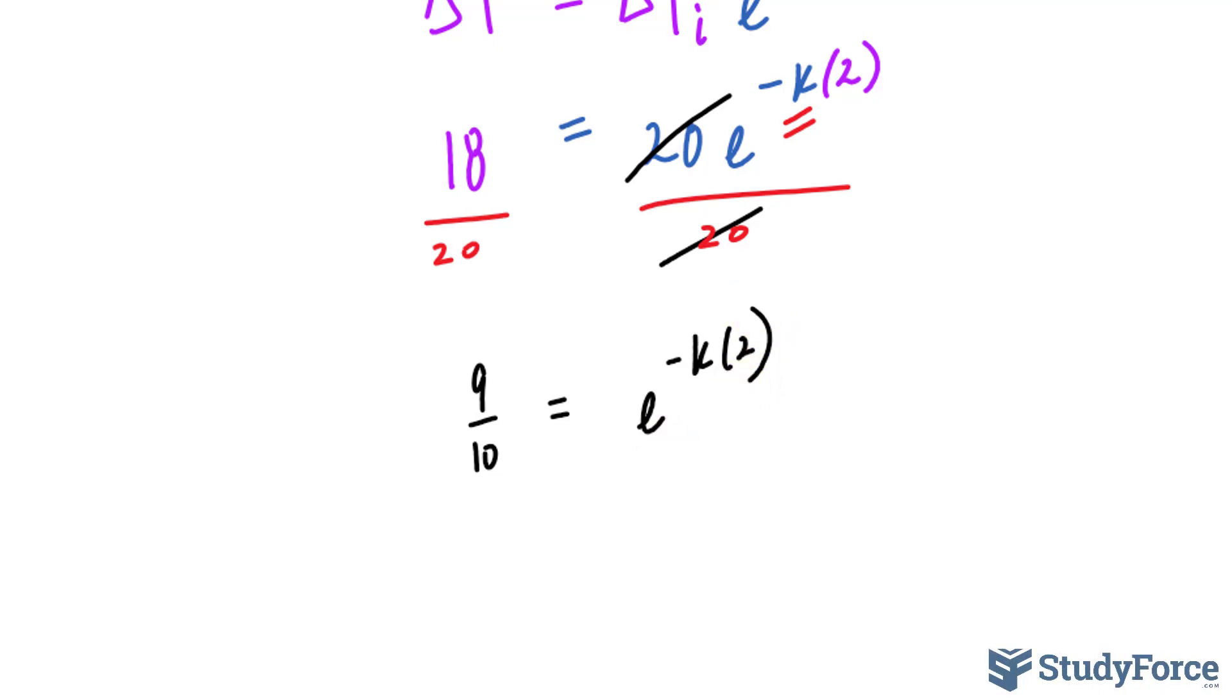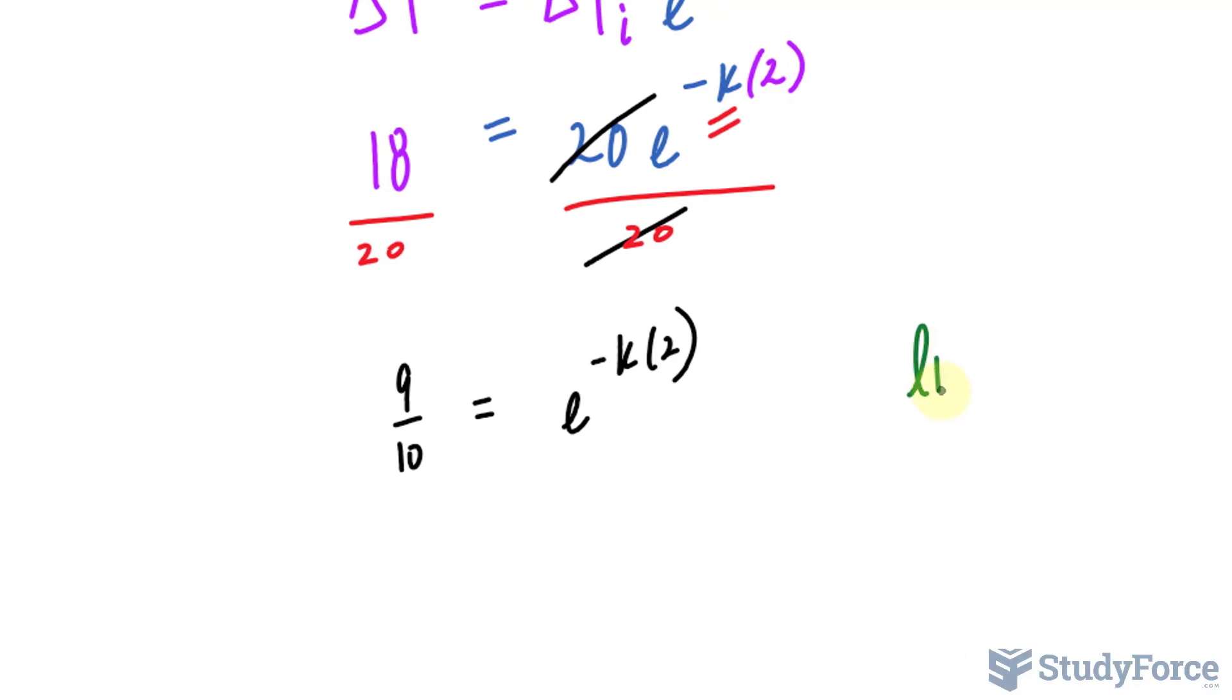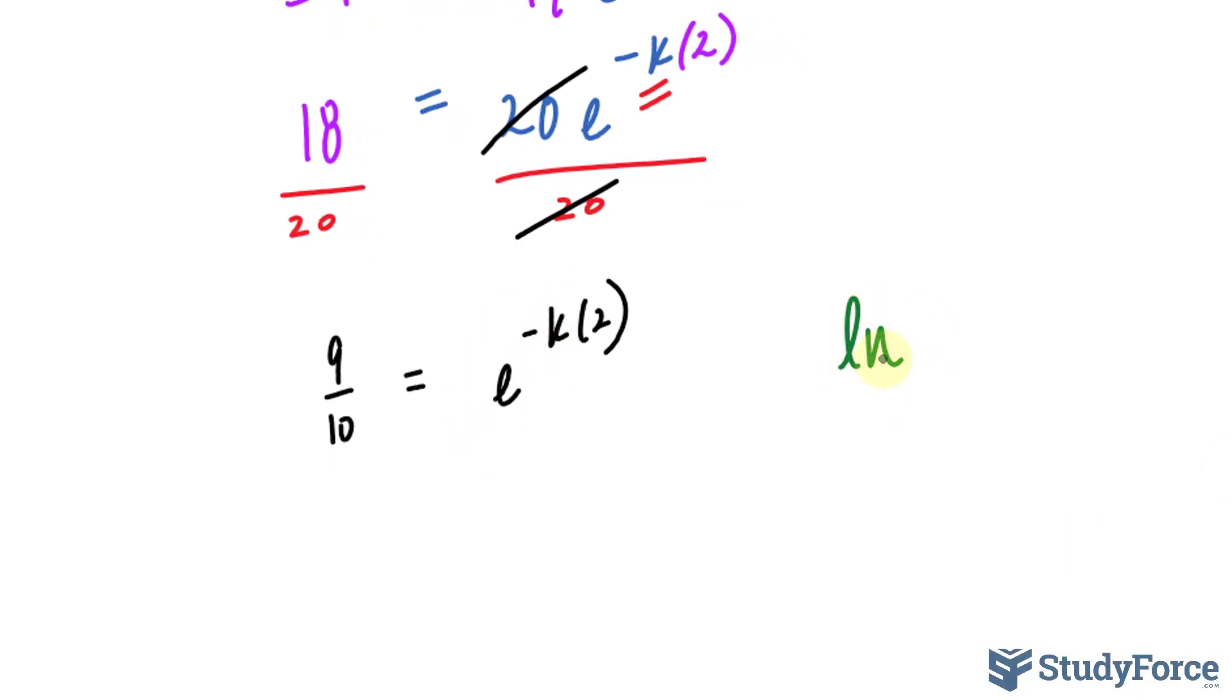Next, I will be using the natural log, or ln, to isolate for that K. Remember that ln is the same thing as log base E. So if I take ln on both sides, the ln and the E here, since ln means log of base E, that will completely cancel out. Leaving us with, on the left side, ln 9 over 10 is equal to negative K times 2.